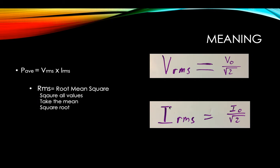If we did the same thing for the current — if we had all of the measured currents over a given time — we'd have another sinusoidal-looking wave, and we would square all those values, take the mean, and take the square root, and that would give us the current RMS value. Luckily, we don't have to do all those calculations if we are given V-naught and I-naught. V_RMS is equal to V-naught over the square root of two, and I_RMS is equal to I-naught over the square root of two.